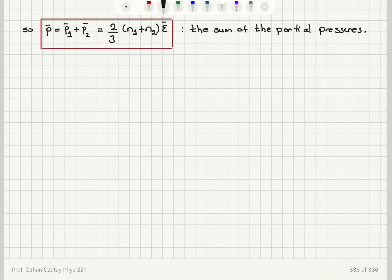So the sum of the partial pressures gives us the final answer: two-thirds times N1 plus N2 times Epsilon bar. All right, we're good.